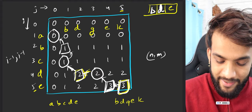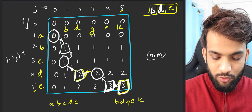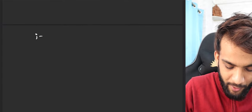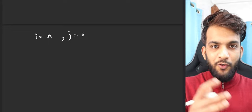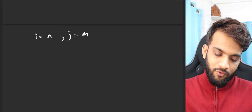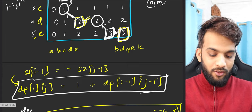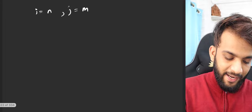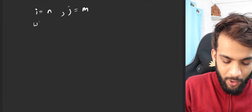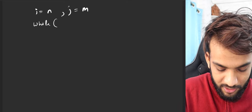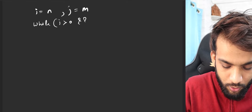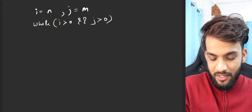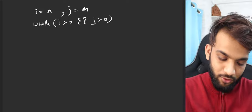So you moved through the table, and whenever there was a diagonal movement you took that character and stored it into the result string of length 3. To write the code: start with i = n and j = m, then keep looping while i > 0 and j > 0 — that means there's still length remaining in both strings.